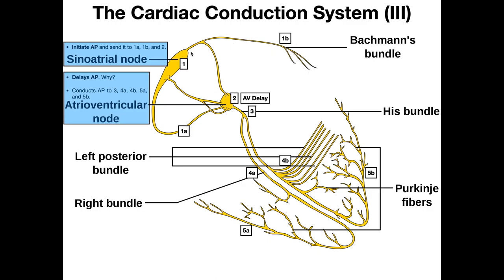Notice that Bachmann's bundle is a terminal branch — it doesn't connect back up at the AV node. The action potentials just cause the left atrium to contract. However, as they're going through the regions in the right atrium, they'll eventually converge at the atrioventricular node, or AV node, which is right on the cusp between the atria and the ventricles. Now at the AV node, there's a delay — it's called the AV delay. Remember, the atria always contract before the ventricles, and that's not just a random thing.